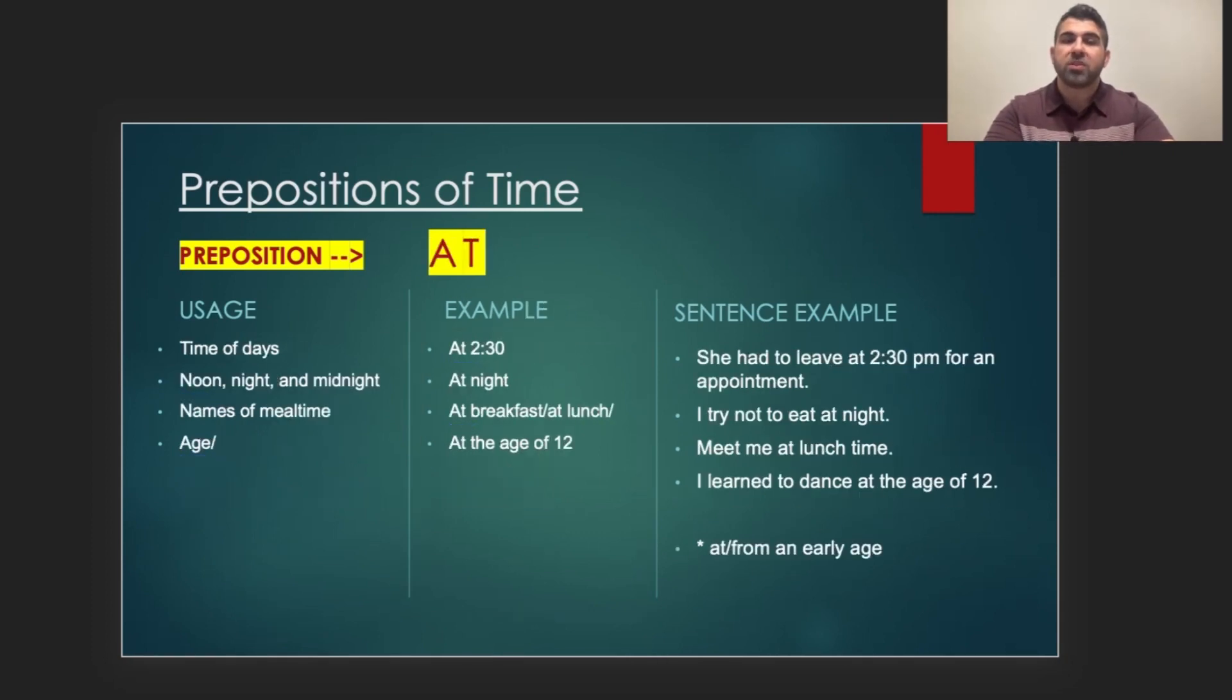Moving on to the preposition of time, at. At can be used for time of day, like at 2:30. She had to leave at 2:30 p.m. for an appointment. It can be used for specific stages of the day, like noon, night, midnight. So, we can say, I try not to eat at night. We can use it for names of meal times, or with the names of meal times. So, we can say, at breakfast, at lunch, at dinner. Meet me at lunch, we can say, meet me at lunch. You can also use it with age. So, we can say, at the age of 12. I learned to dance at the age of 12. Sometimes, we use from an early age as well.